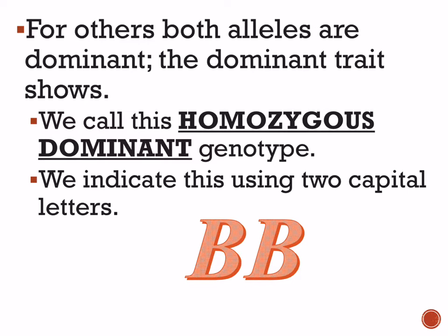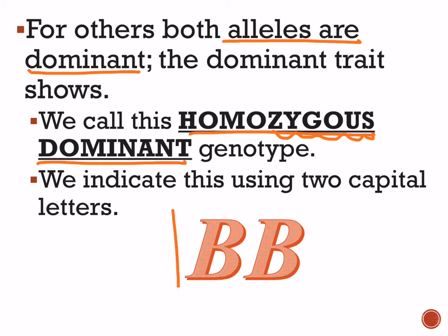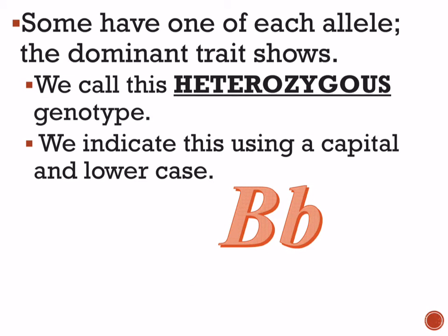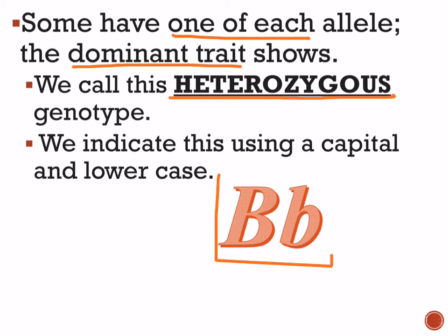For other individuals, perhaps both alleles are dominant — in this case the dominant trait shows, and we call this homozygous dominant. By the way, 'homo' means same, and 'zygous' refers to the zygote or offspring. We indicate homozygous dominant using two capital letters. Now, an individual could also have one of each allele. In this case the dominant trait shows because the recessive is hiding behind the dominant. We call this heterozygous — 'hetero' meaning different — and we indicate it using one capital and one lowercase letter.